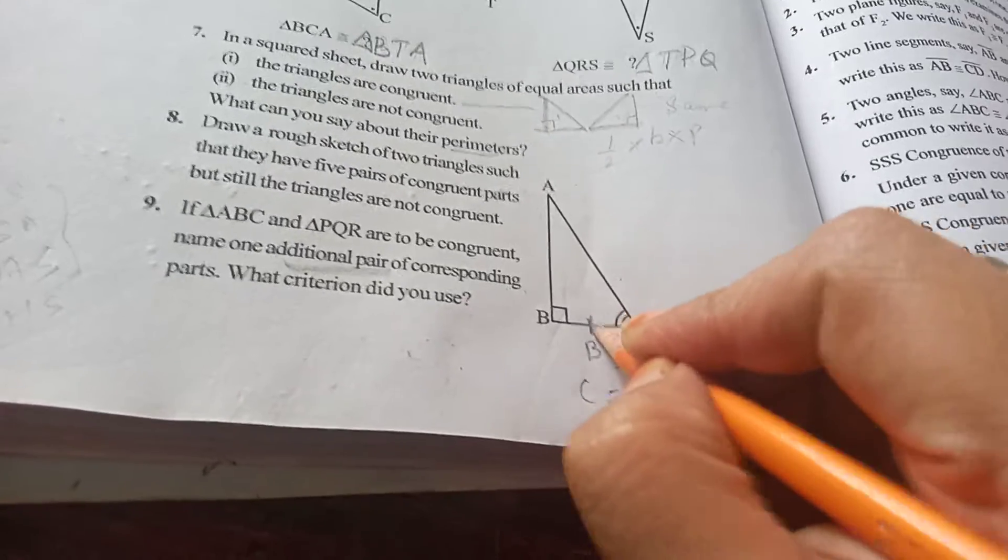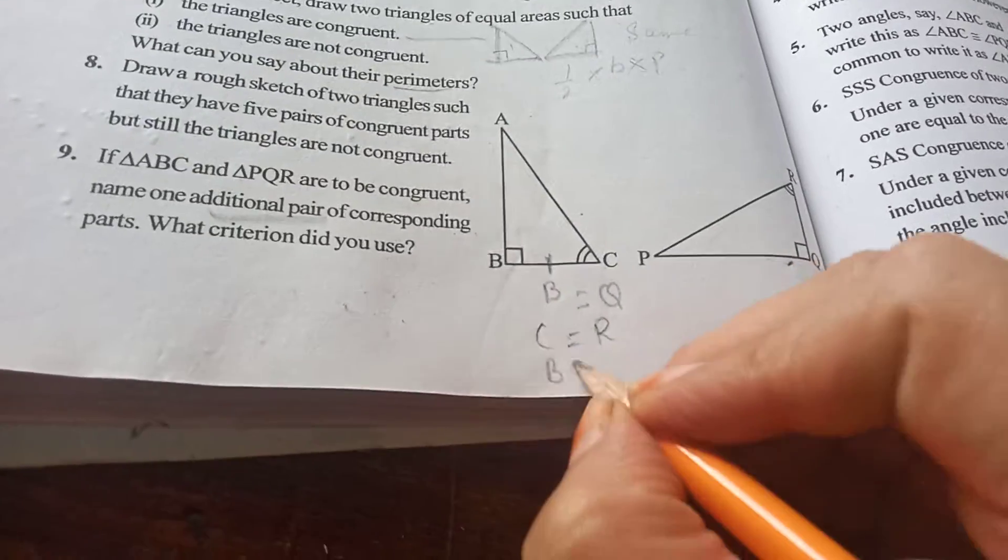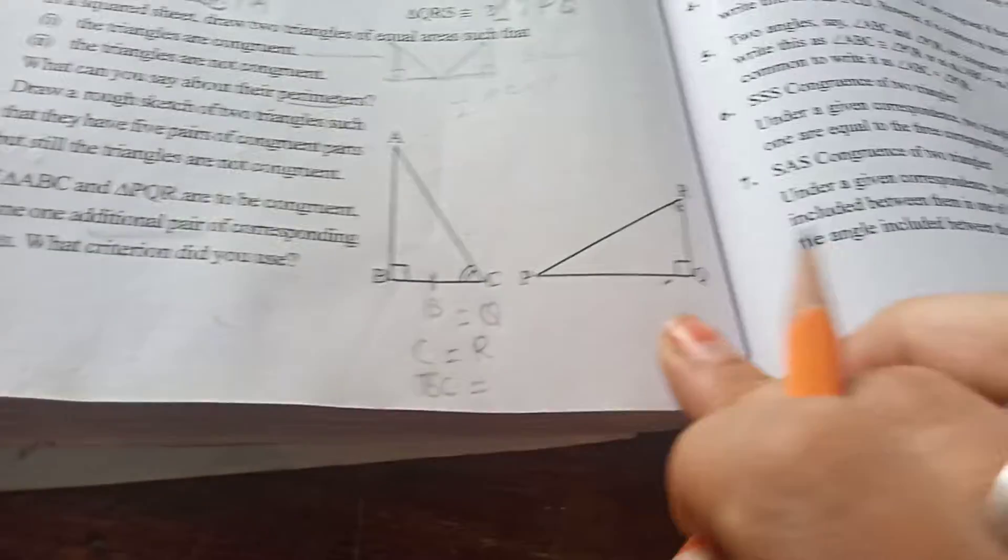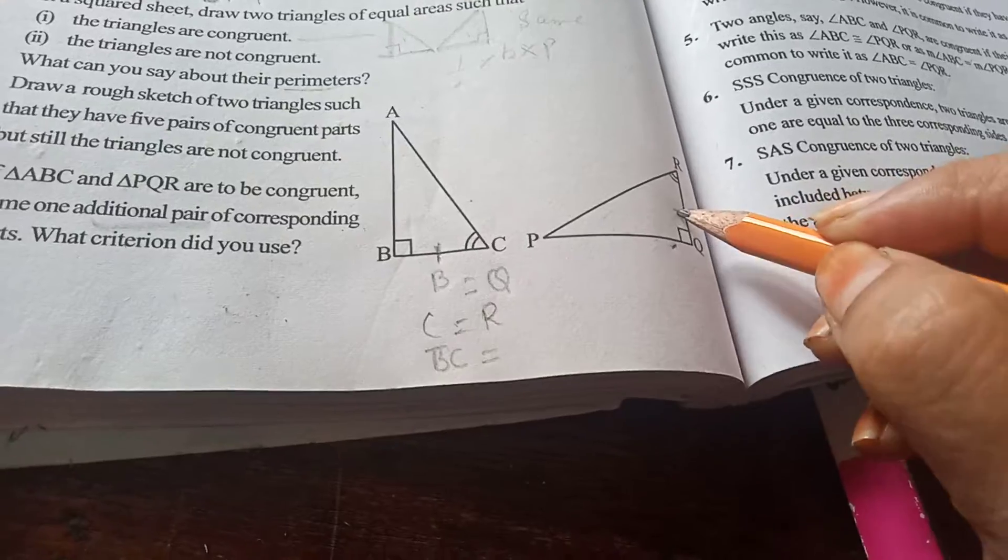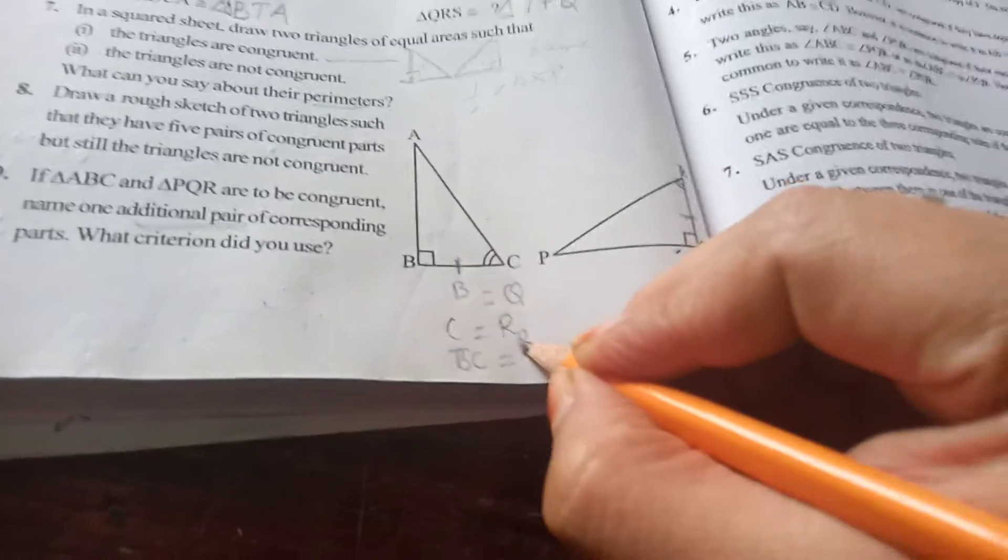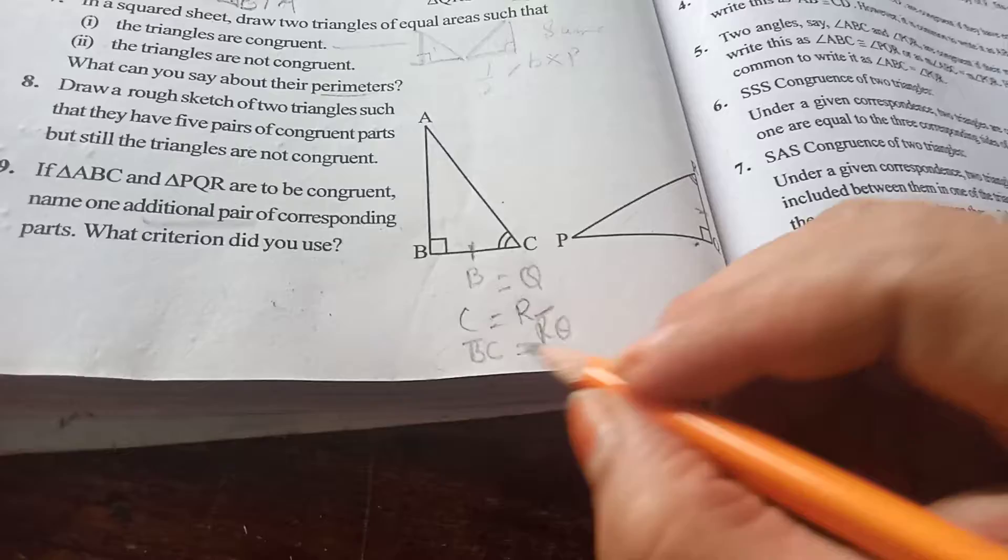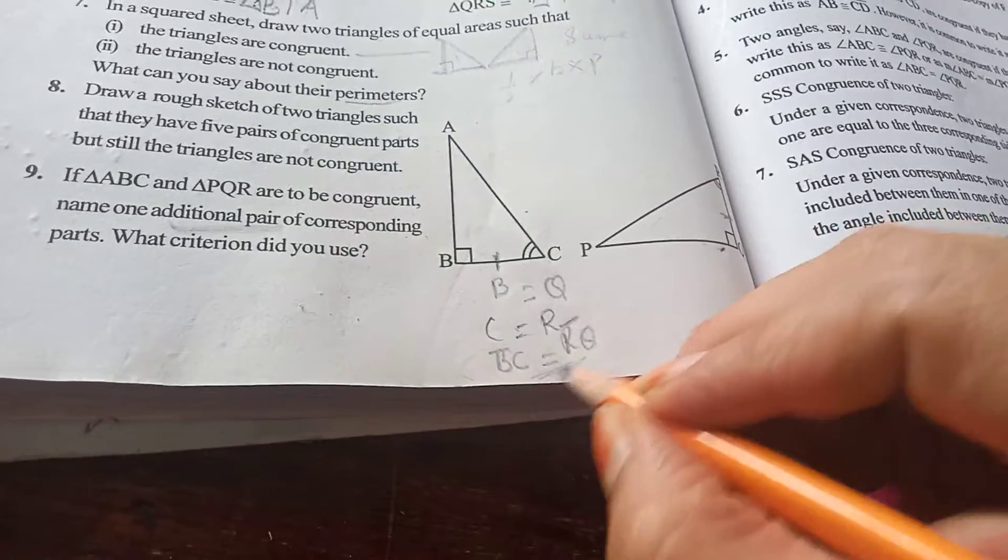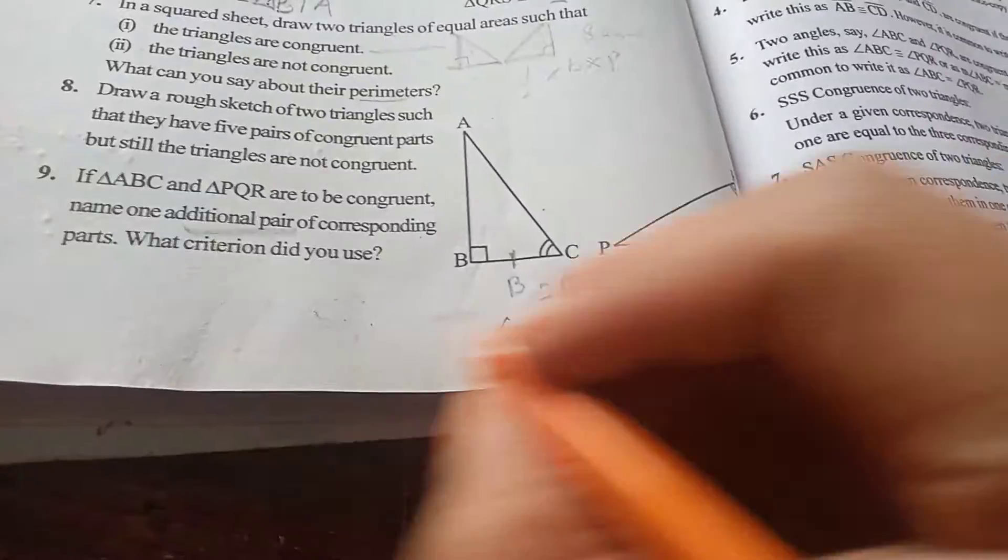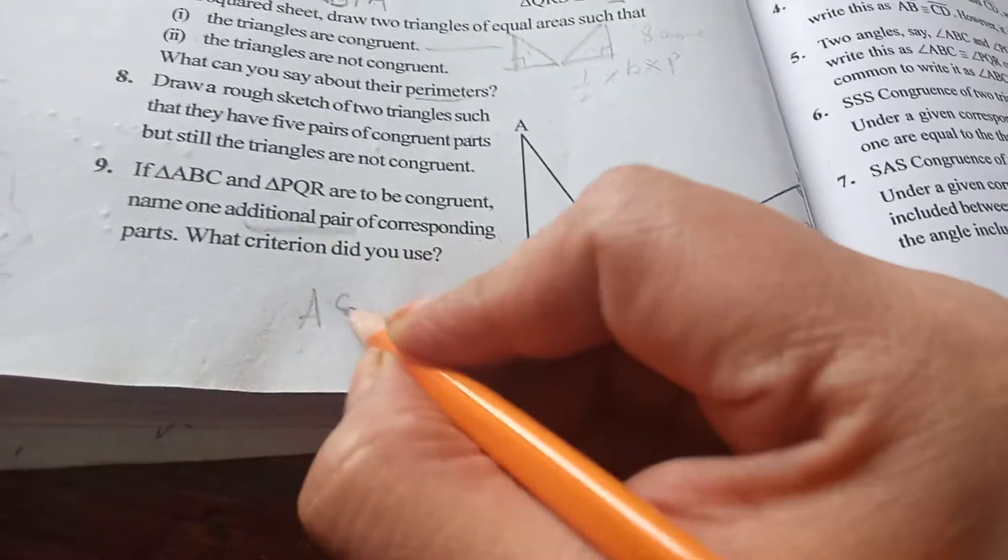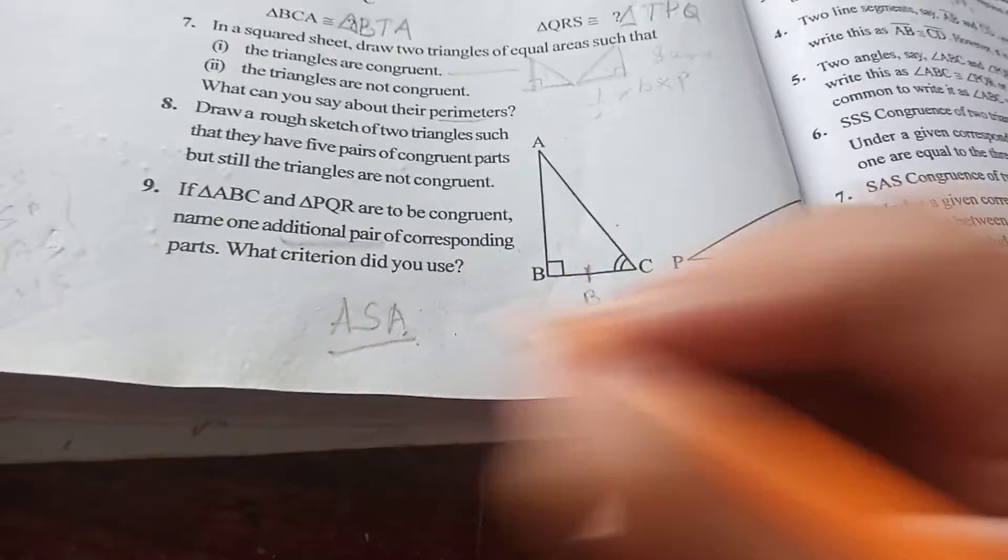so this is the including side. So BC equal to this, here it will come RQ, isn't it? So take RQ here. So the additional pair is this and criteria by ASA, angle side angle.